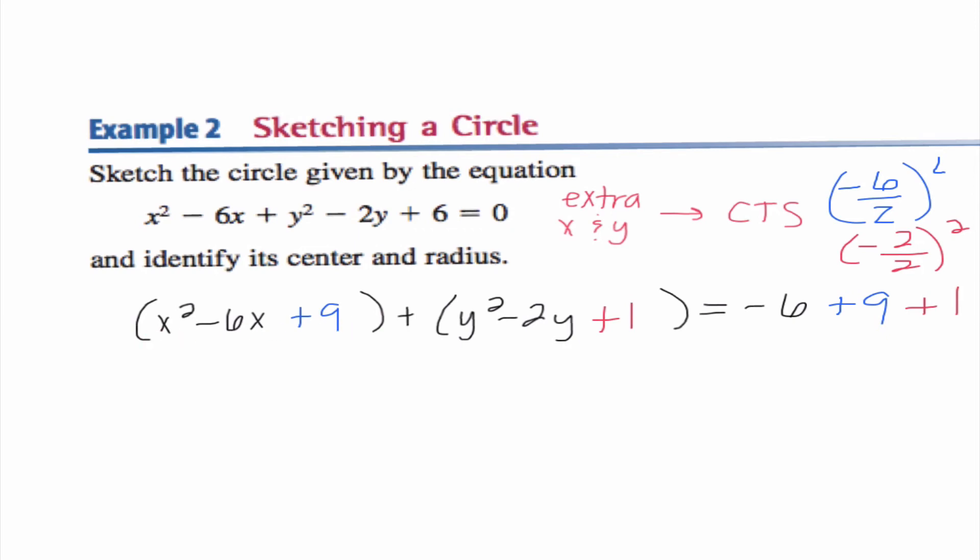And we know that in order to factor this, it's always going to be, since this is x squared, it's going to be x. And this number is going to be half of this middle coefficient. So in this case, it's going to be (x - 3)². The reason why this works, -3 plus -3 is -6. -3 times -3 is positive 9. Using the same logic, when I factor y² - 2y + 1, I get (y - 1)². And when I add all these numbers together on the right-hand side, I get 4.